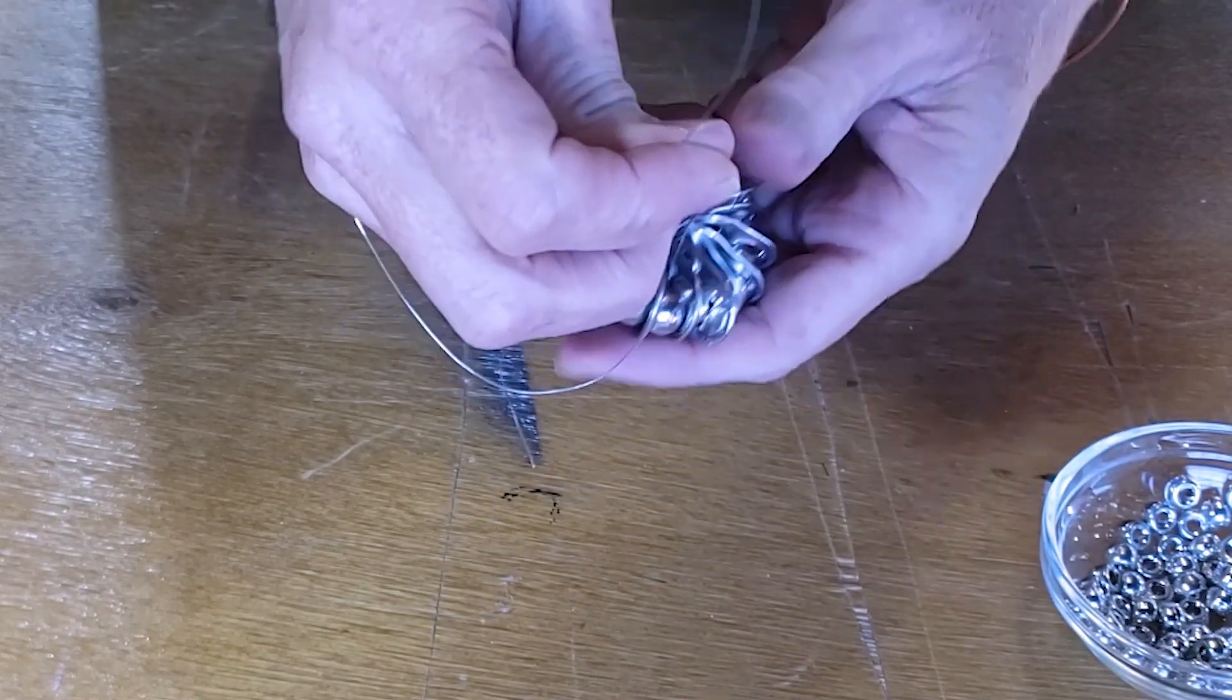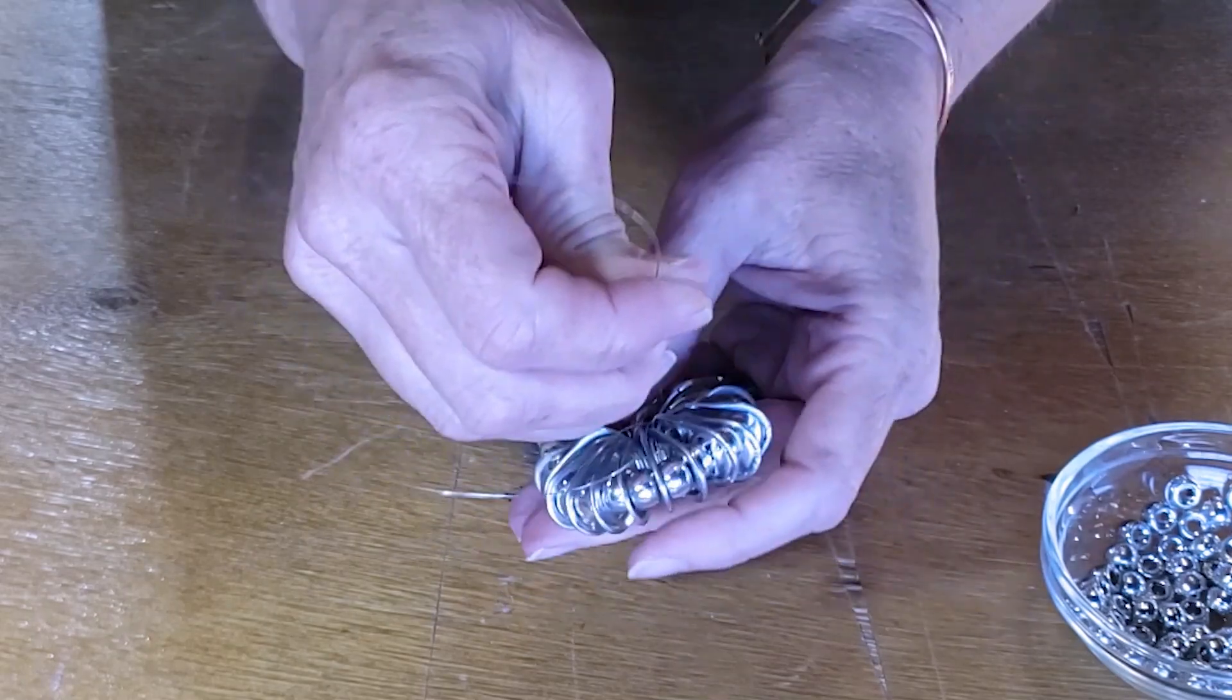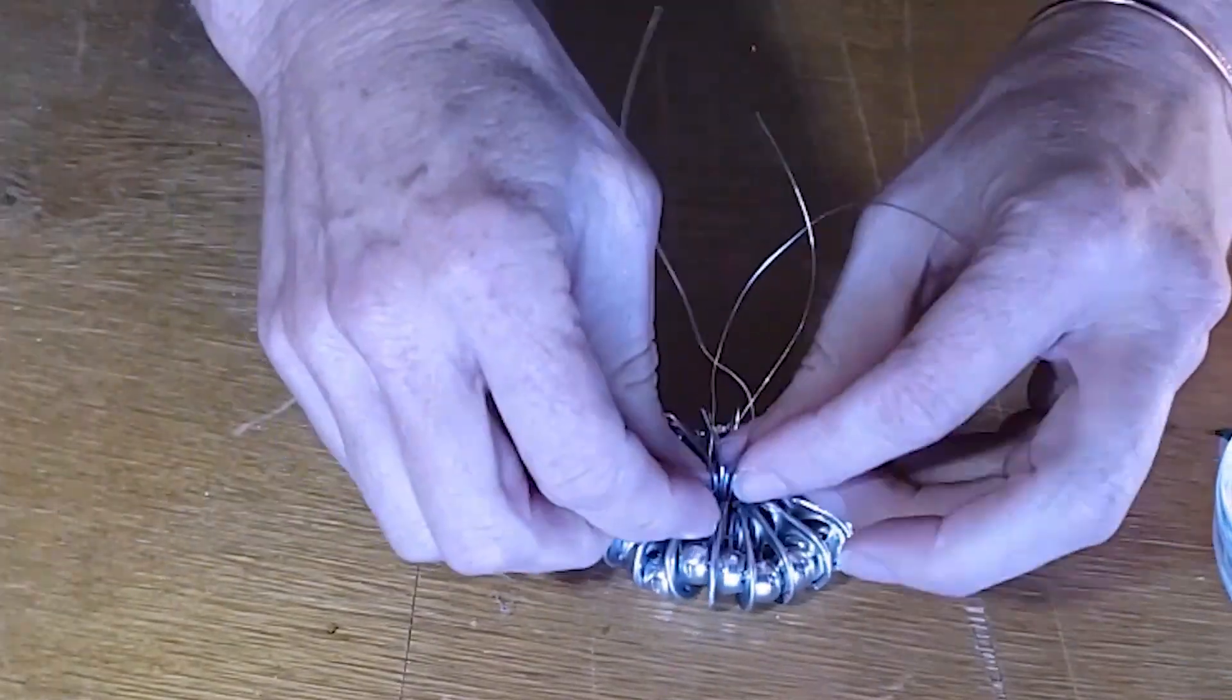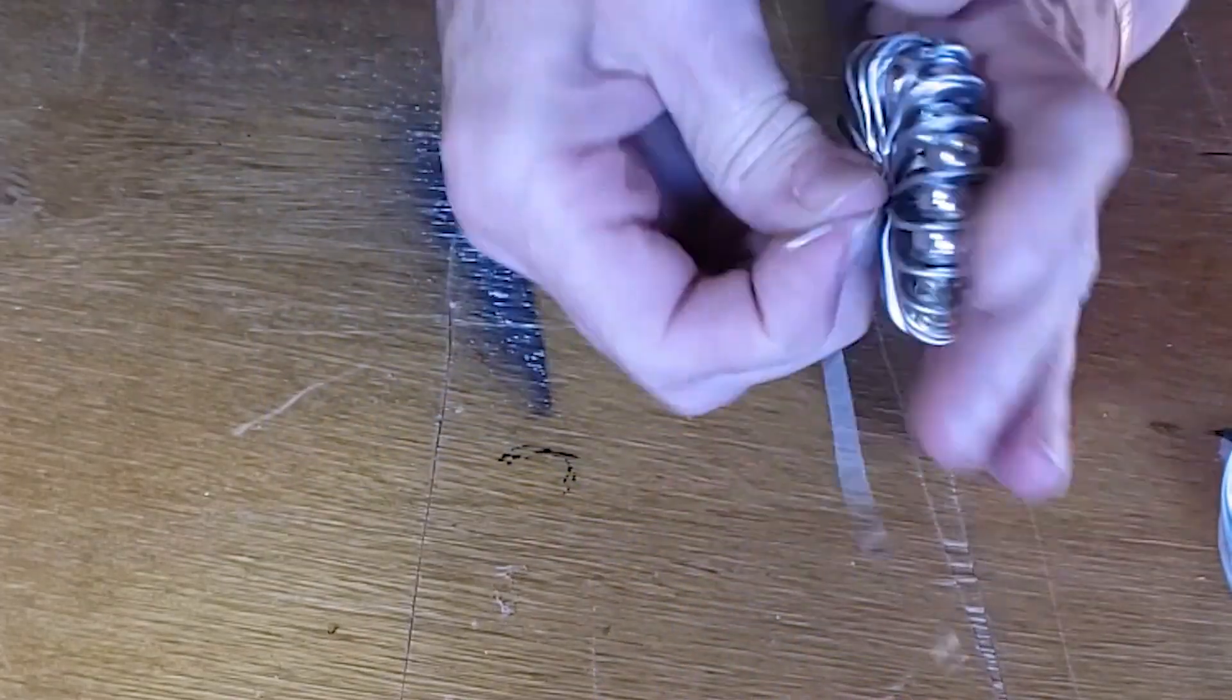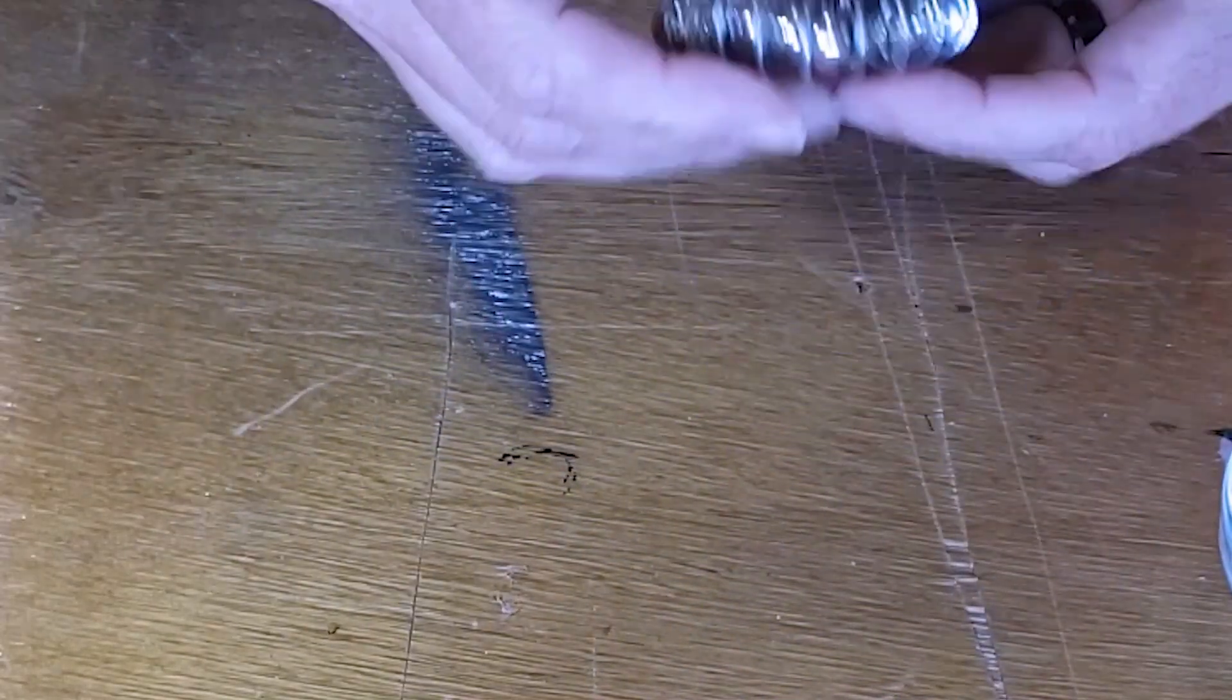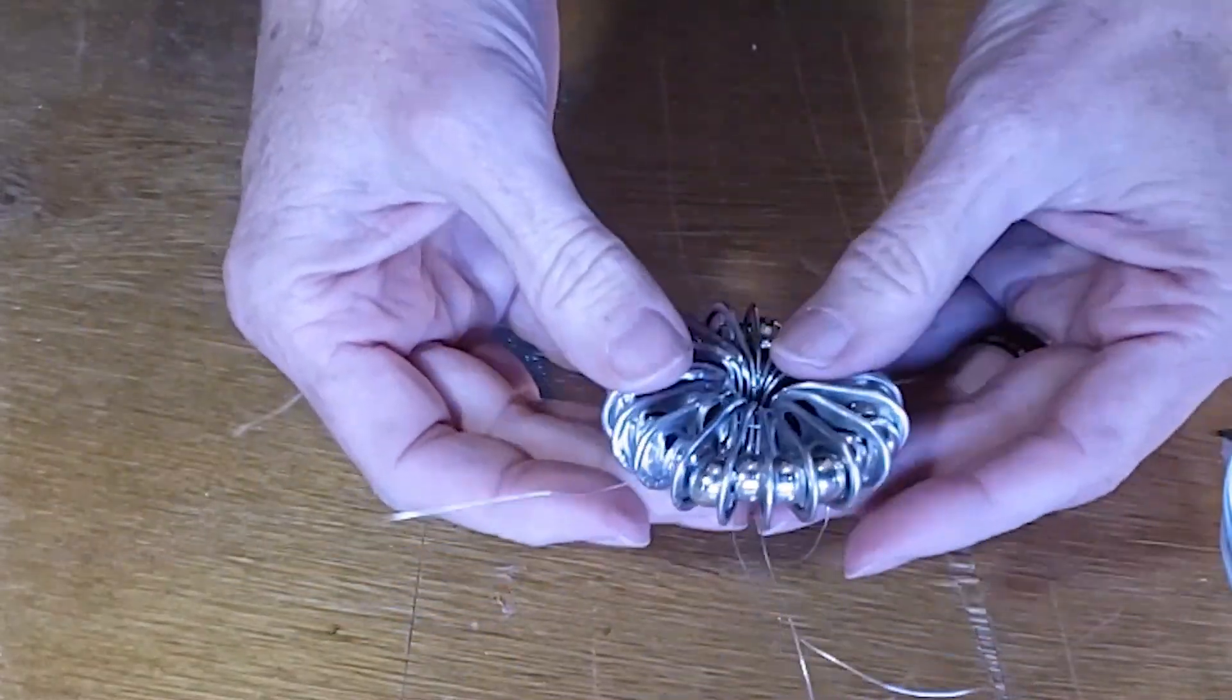To finish the ornament you can weave the excess wire through the shape to tie off the ends and you can experiment with coiling the wire and gluing it in place to finish off the ends and also you can try using different beads.